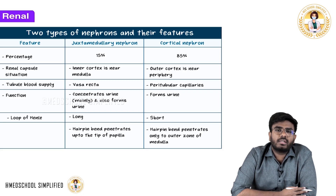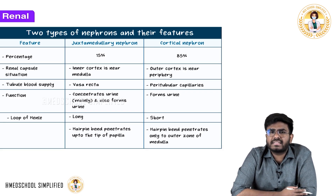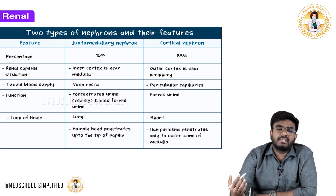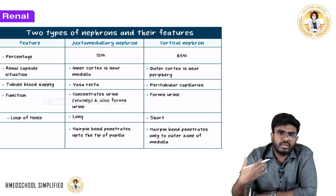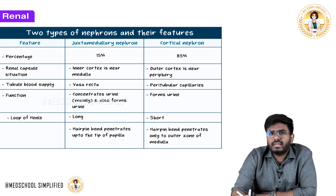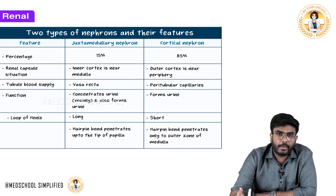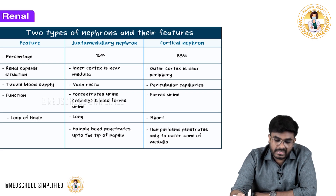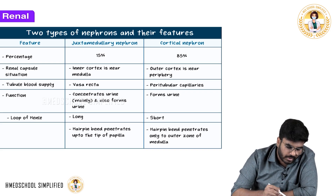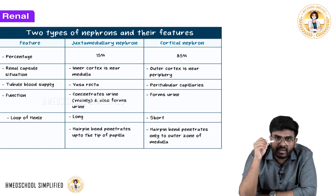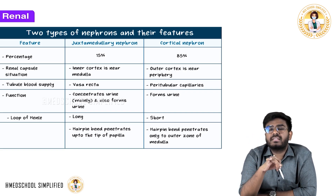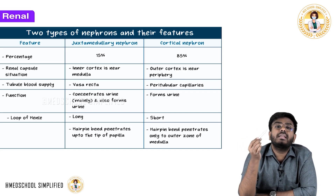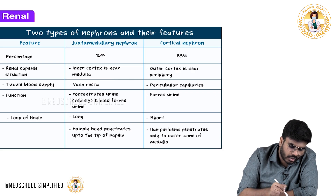For example, imagine you are lost in a desert and getting dehydrated. In that condition, it is not the right time to produce diluted urine — you need to conserve as much water as possible and produce concentrated urine. Concentration of urine is done by juxtamedullary nephrons, which go deep down into the medulla with their long loop of Henle.